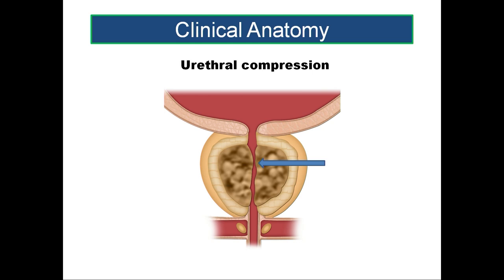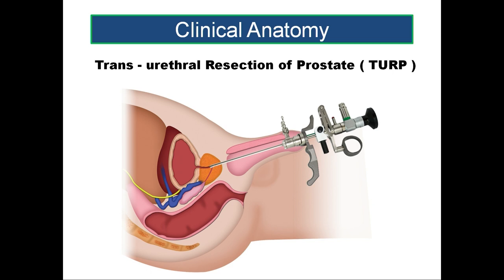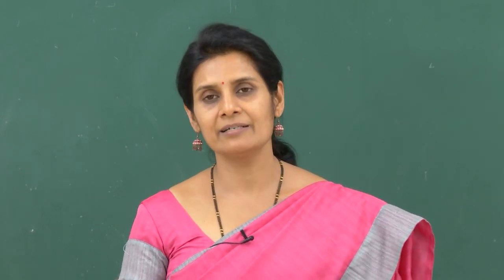This narrowed urethra results in urinary disturbances like frequency of micturition, difficulty in passing urine, and nocturia, where the person gets up many times at night due to stagnation of urine. Enlarged prostate can be approached through several routes: transvesical through the bladder, retropubic behind the pubis, transperineal through the perineum, and transurethral resection of prostate — TURP. With this we complete the applied aspects related to the prostate.